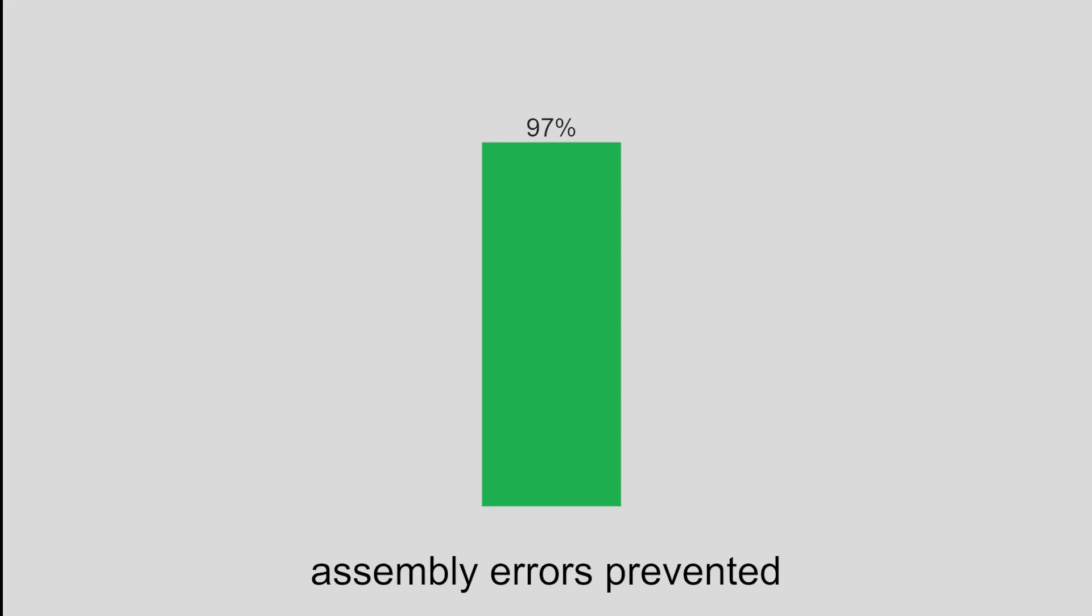In our technical evaluation, FoolProofJoint prevented assembly errors for 97% of 217 tested models.